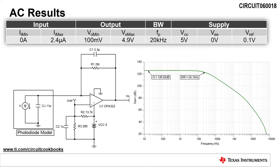Running an AC sweep analysis, we find that the bandwidth of the circuit is 24.1 kilohertz, which meets our design goal of 20 kilohertz.